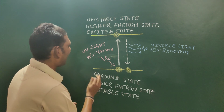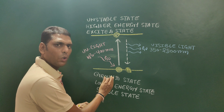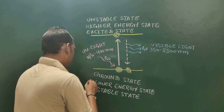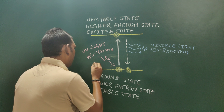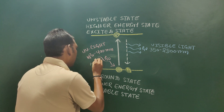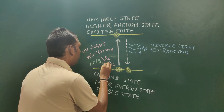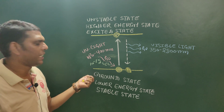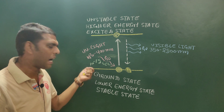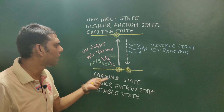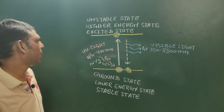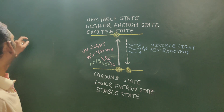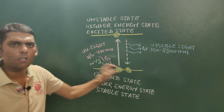The time of absorption of radiation by the molecule in its ground state is about 10 to the power minus 15 seconds. Now let's talk about the terms fluorescence and phosphorescence.